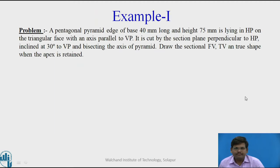Consider an example: a pentagonal pyramid, edge of base 40 mm long and height 75 mm, is lying on HP on the triangular face with its axis parallel to VP. It is cut by the sectional plane perpendicular to HP, inclined at 30 degrees to VP and bisecting the axis of the pyramid. Draw the sectional front view, top view and true shape when the apex is retained.